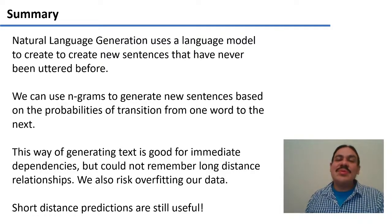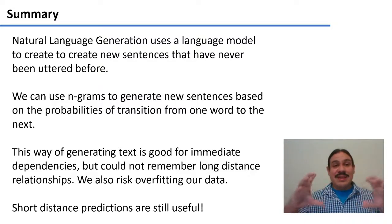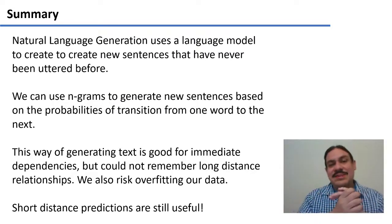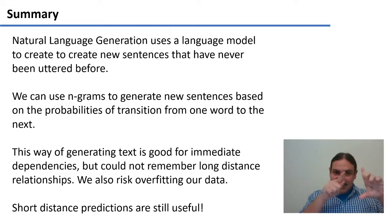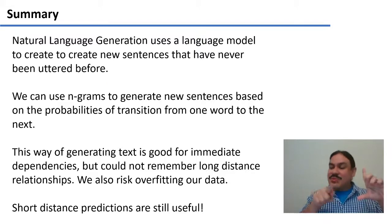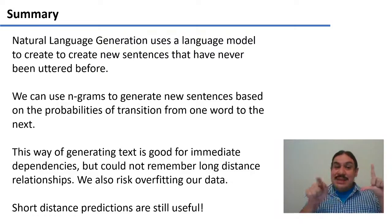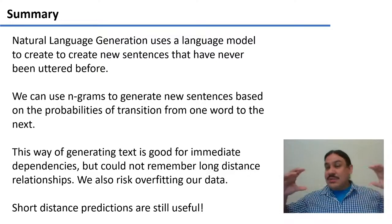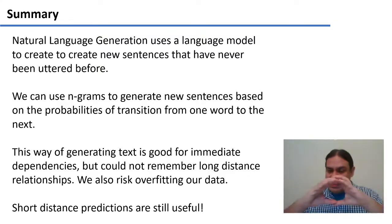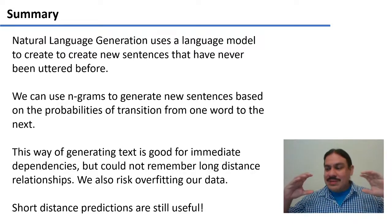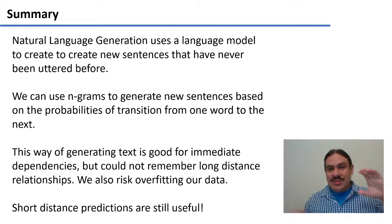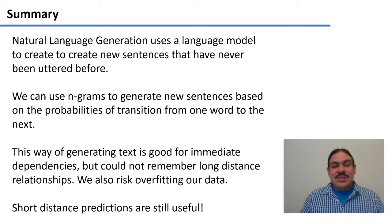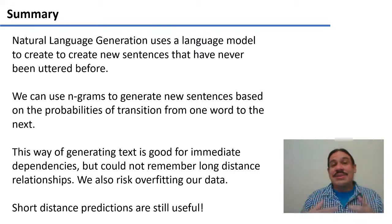In summary, natural language generation is a process that uses an existing language model, like an n-gram, to create new sentences that have never been uttered. We can use n-grams to generate new sentences by jumping from one bigram to the other, from one trigram to the other. This is very good for modeling immediate short distance dependencies, but it's not going to be good at remembering long distance dependencies, because the larger our n-grams are, the more we are overfitting the data. The more it's just the one path we saw when we were taking the data in. But this doesn't mean that n-grams are not useful. They're very useful. In the next videos of the week, we're going to look at some of their applications. For example, prediction of texts, prediction of words in texting and spellchecking.